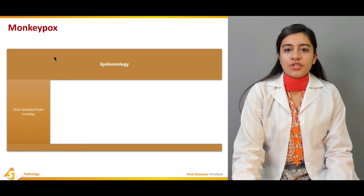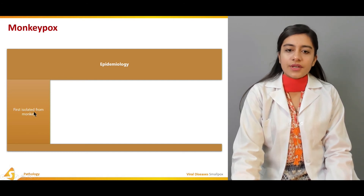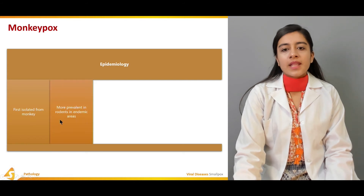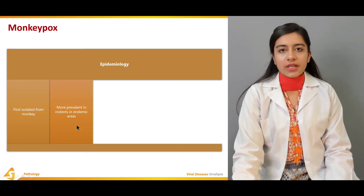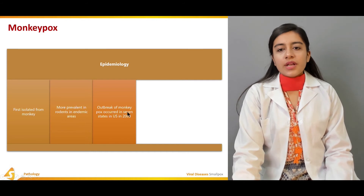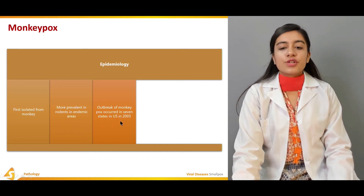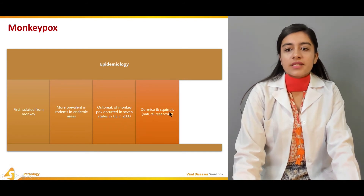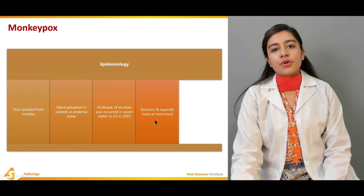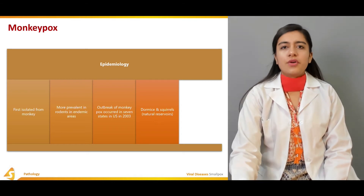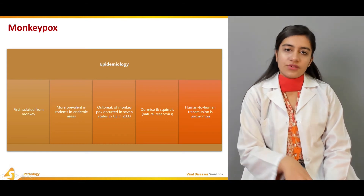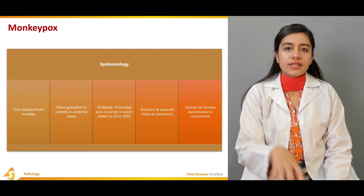Regarding monkeypox epidemiology, it was first isolated from monkeys — hence the name. It is more prevalent in rodents in endemic areas. An outbreak of monkeypox occurred in seven states of the US in 2003. Dormice and squirrels are considered the natural hosts, and human-to-human transmission is uncommon — it is primarily transmitted from animals to humans.